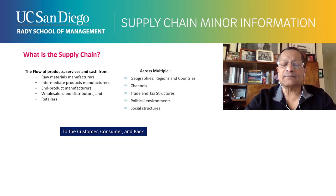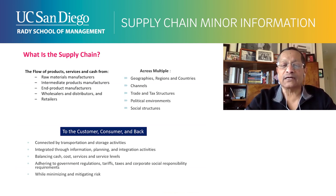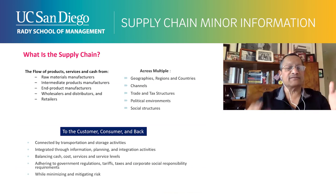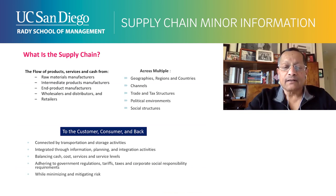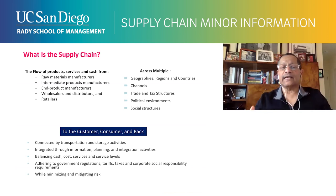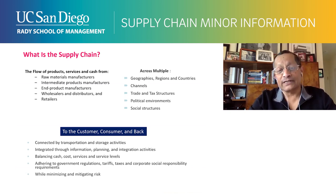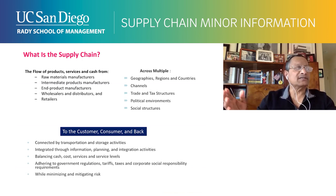The entire supply chain goes from the supplier to the consumer and back. It revolves around the customer and is connected by transportation and storage activities. It's integrated through planning, balances cost, cash, and service levels. You have to adhere to government regulations, be socially responsible, and manage risk.